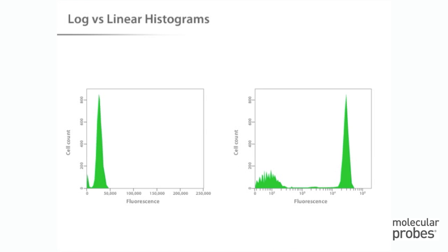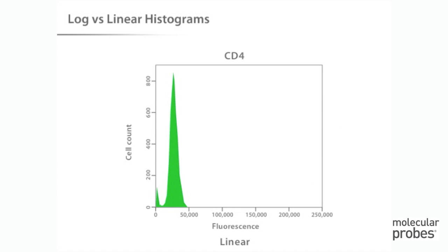Once the data has been collected, we can use histograms or dot plots to graphically represent the data. Each of these plot types can be generated using linear scaling or logarithmic scaling, also called log scaling. Here, cells are stained with a fluorescently labeled antibody reacting to the CD4 cell surface antigen, which generates events with fluorescence intensities that can vary 100-fold or more. If we use linear scaling in histograms for this type of data, it is difficult to see both the CD4 positive and negative populations at the same time, as the CD4 negative population is compressed against the axis.